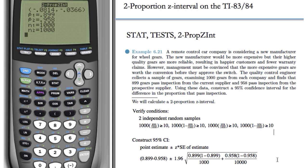So, negative 0.08 to negative 0.0366. So what can we learn from this interval? We're 95% confident that the true difference in the proportion that pass inspection lies in this interval. Because the whole interval is negative, which one do we have evidence is bigger?